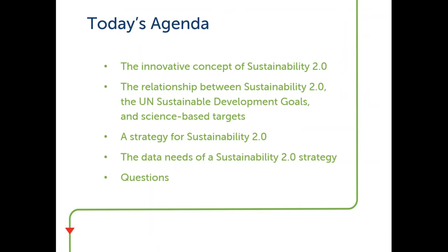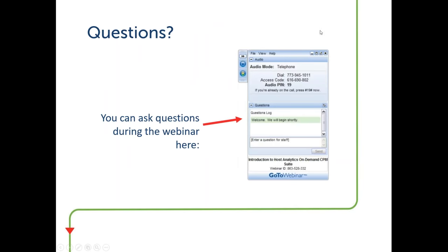Today's agenda covers the innovative concept of Sustainability 2.0, the relationship between Sustainability 2.0, the UN SDGs and science-based targets, a strategy for Sustainability 2.0, and the data needs of that strategy — and of course some questions at the end. As you can see, there should be the ability to ask questions throughout the duration of the webinar, which will be an hour long, finishing by 4pm GMT. Any questions we don't get through we will follow up by email. We're also going to record this webinar and post it on our YouTube channel within the next day or so.